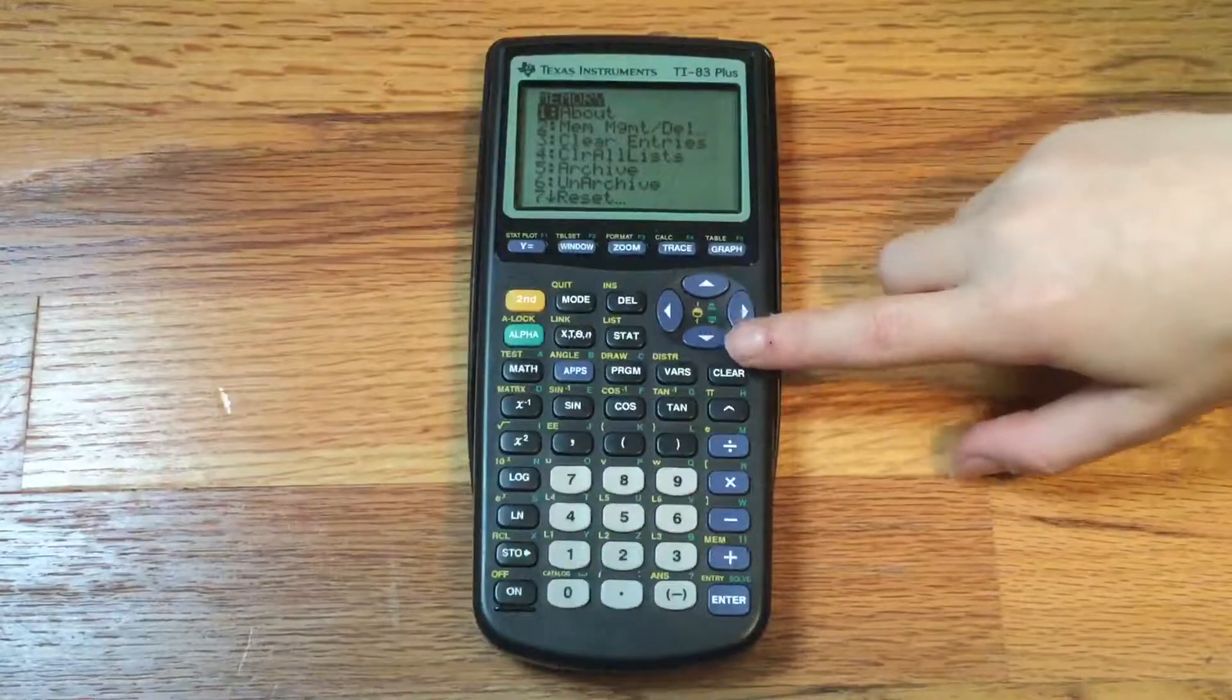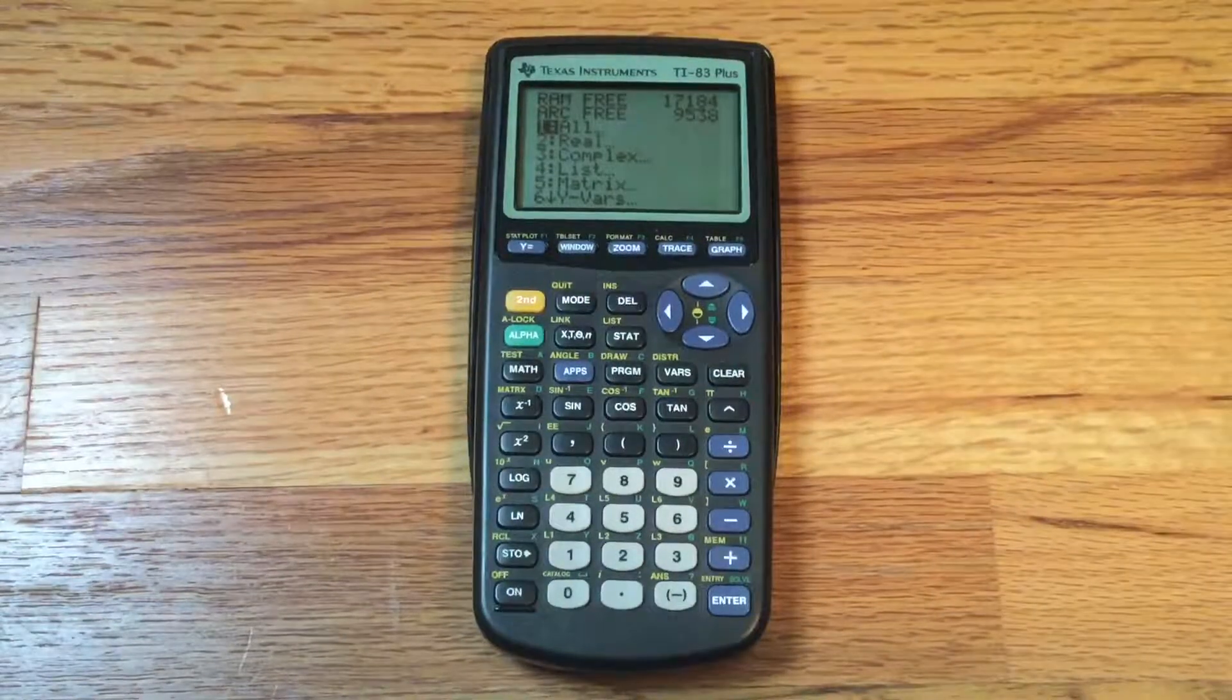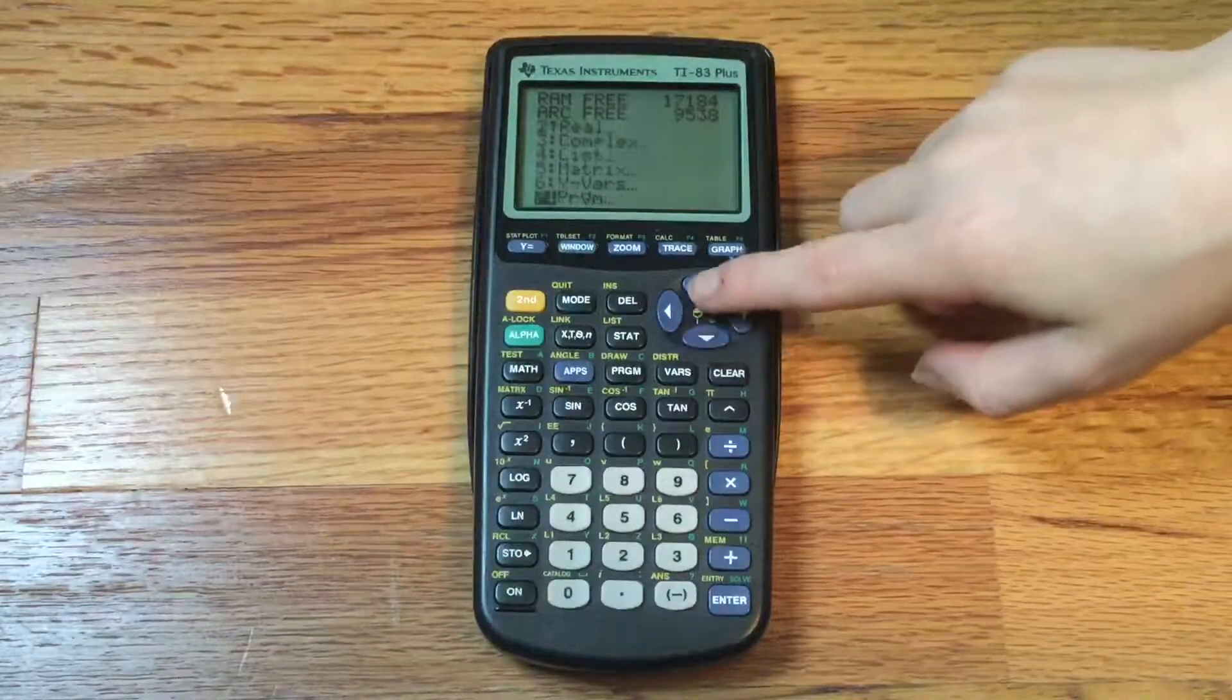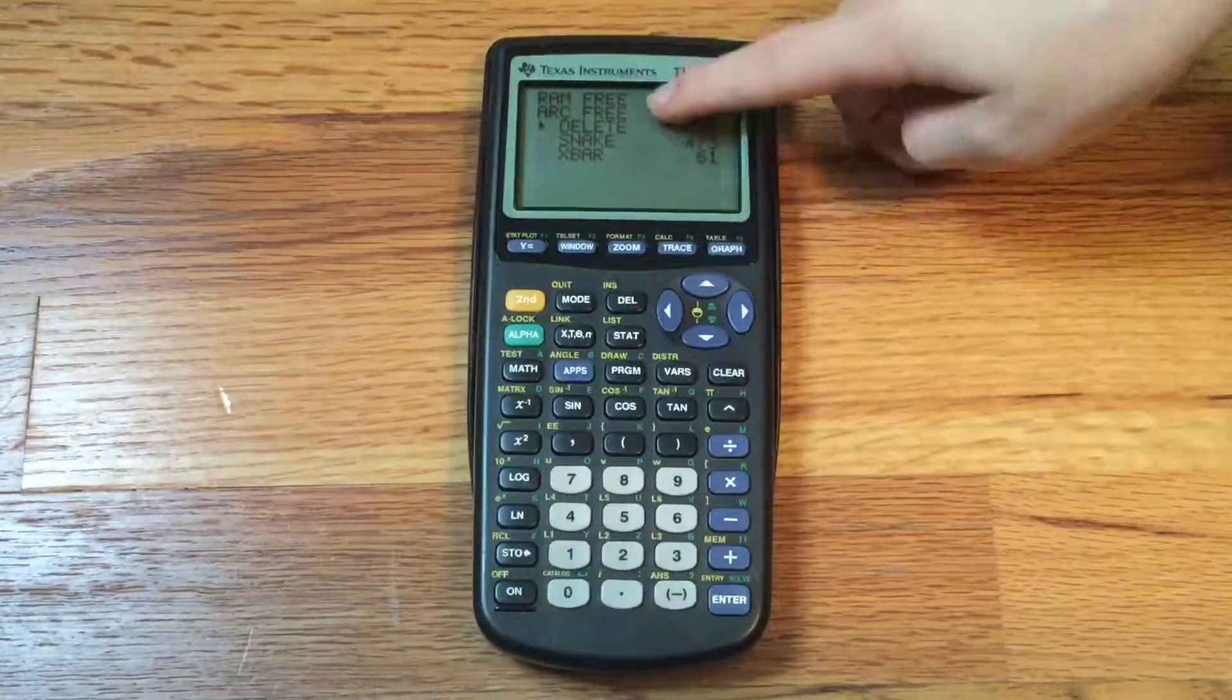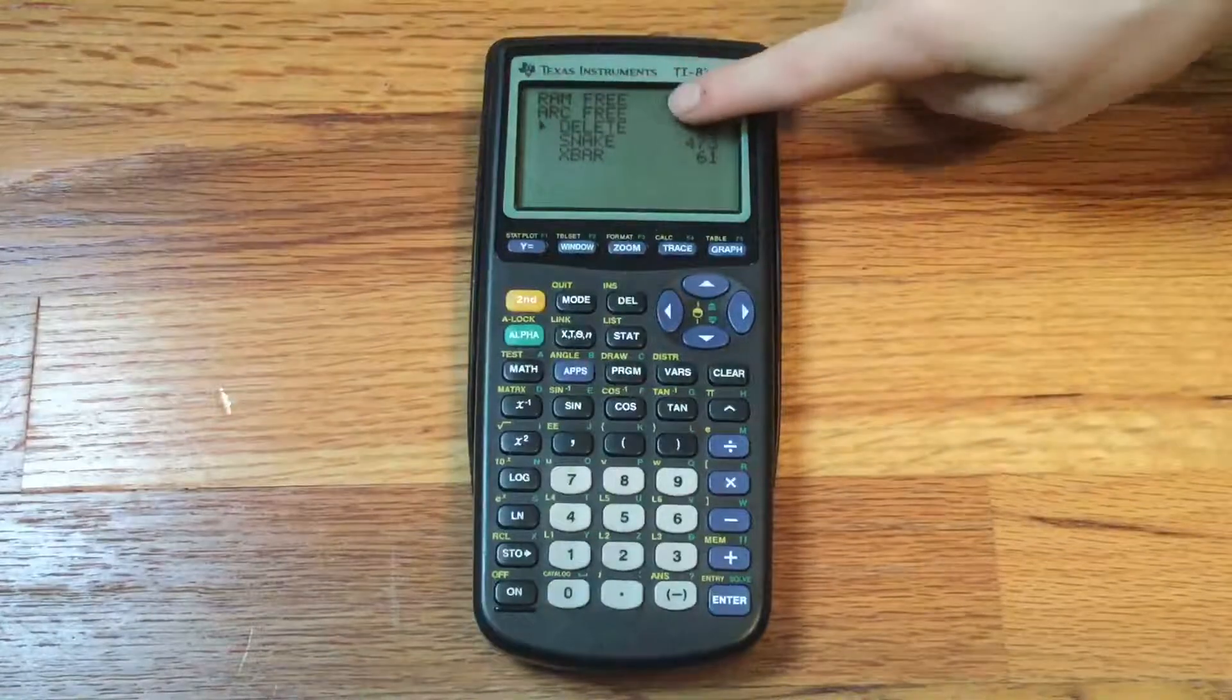What you want to do now is scroll down and hit enter, and this shows what's taking the memory. You want to scroll down all the way to the seventh option, which is program, hit enter, and then you're going to see all your programs. I have three, and I'm going to delete my program called delete.